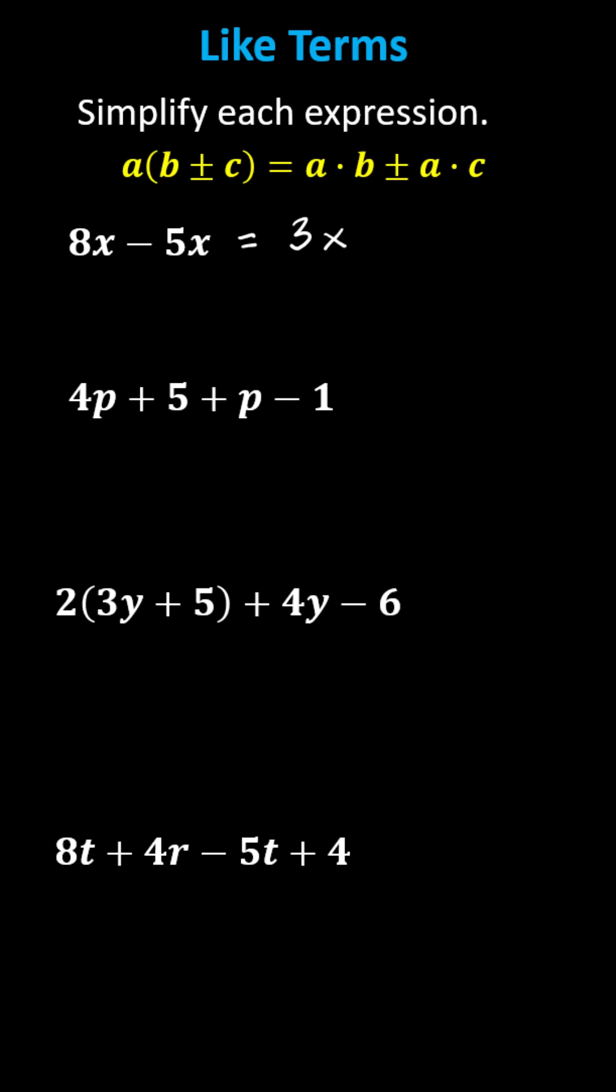Again, using the distributive property, if we factor the common factor of x out and place it on the right instead of the left, we'd be left with the difference of 8 and 5. Notice if we distribute, we still have 8x minus 5x.